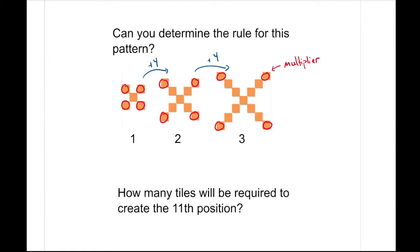You could also think, well, if I'm looking at this pattern, I'm adding four squares on every time. The only thing that I can't really add four squares onto would be this kind of center object. So this center object is kind of what's staying the same. And if it's staying the same, then that means it's our constant.